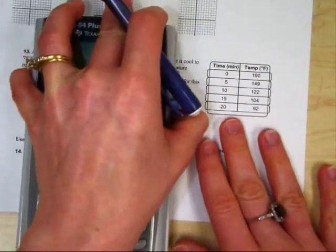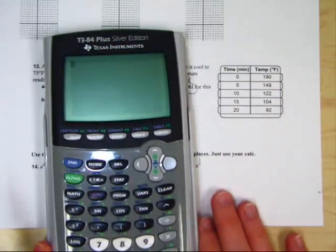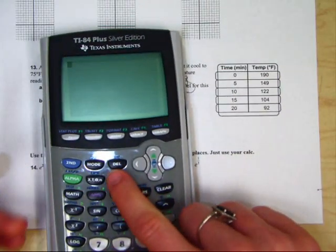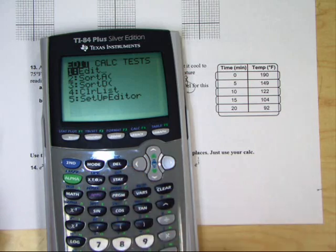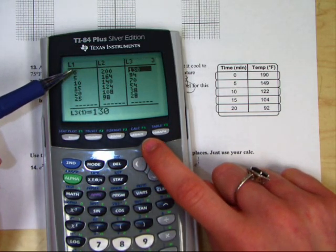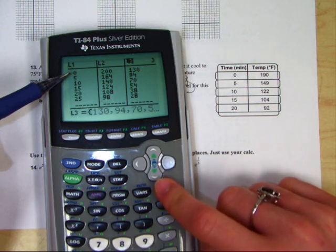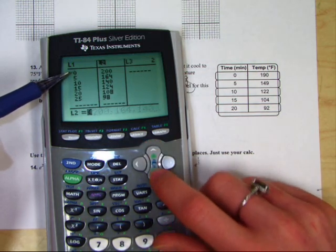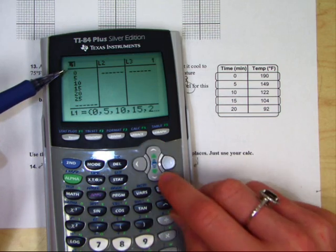What we need to do first is get your calculator and put it into the list feature. In order to do that, you hit stat and select number 1. If you have any values in here, go up to the list, hit clear and down. Do that for each list so you have nothing showing.